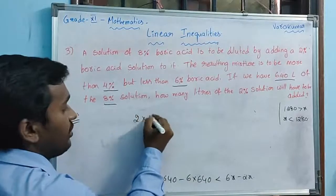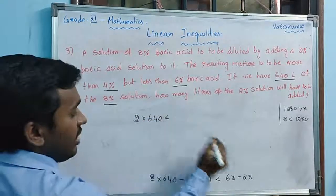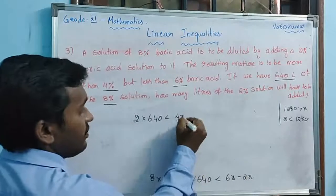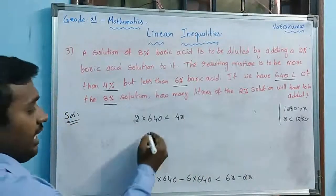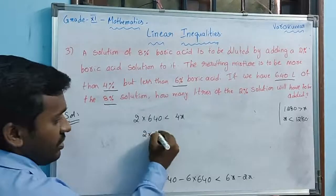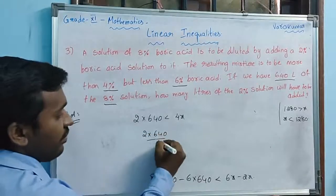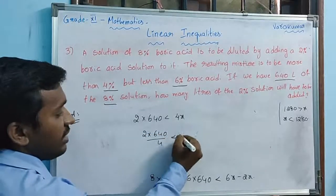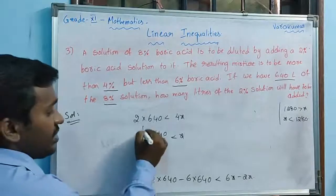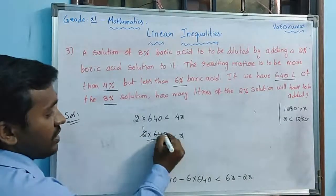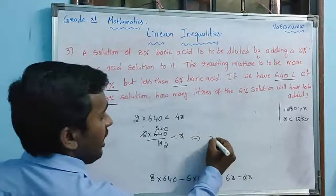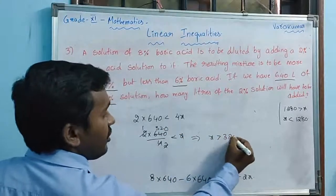Subtracting gives 2×640 less than 4x, which simplifies to 1280 less than 4x. Dividing by 4: 320 less than x — that is, x greater than 320.